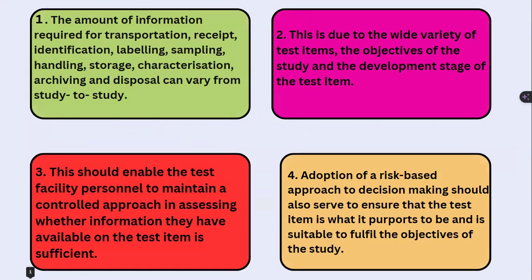General information about test item characterization includes transportation, receipt, identification, labeling, sampling, handling, storage, characterization, archiving, and disposal — and these vary from study to study. Because test items differ from each other, all these characterizations can differ, due to the wide variety of test items and their development and study stage.